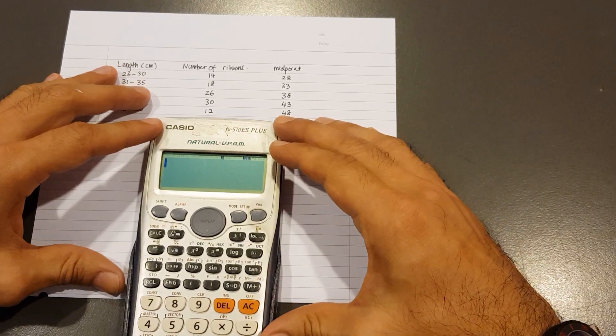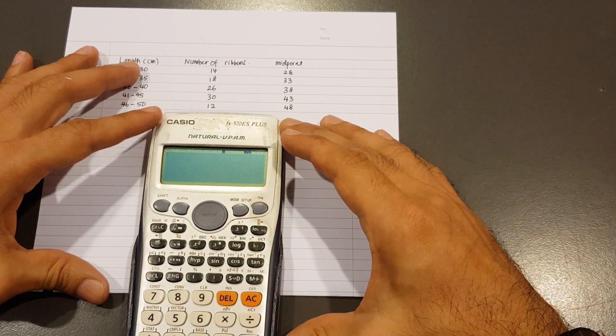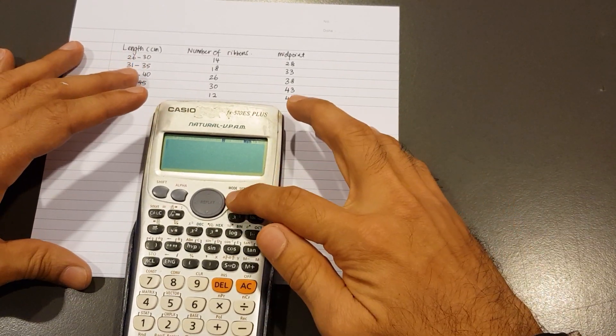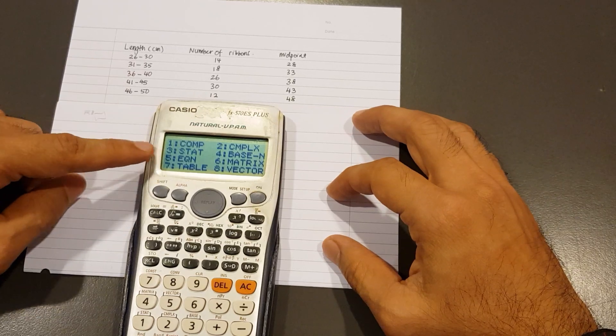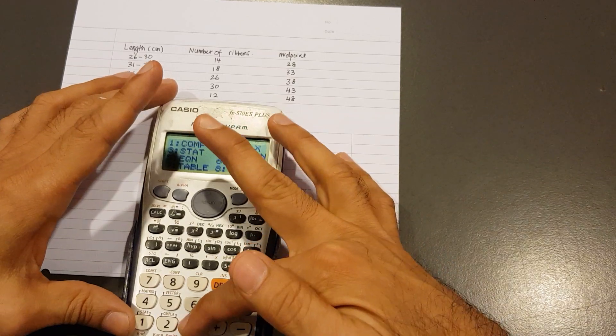To get straight into keying in the data into the calculator, first we're going to hit Mode. Look for number 3 - that's Stat, short for statistics. So tap number 3.